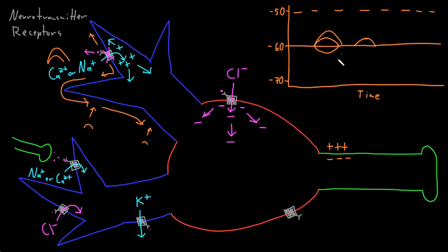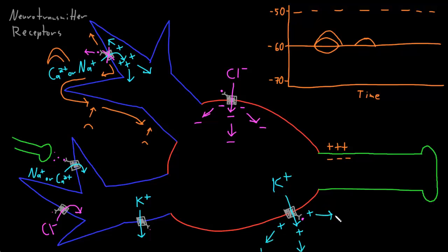Inhibitory potentials may also occur if a neurotransmitter receptor allows potassium ions to exit the neuron. The mechanism is the same, but now there is a collection of positive charges around the open channel on the outside of the membrane, making the positive outside even more positive — which is the same as saying the inside of the membrane is more negative, giving you a hyperpolarization. This little area of increased potassium ion concentration will then rapidly dissipate into the interstitial fluid outside of the neuron.